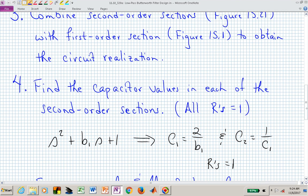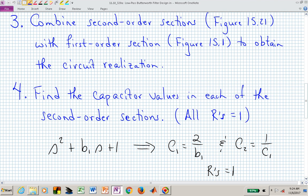Once we've determined how many second order sections we have, then for each second order section we have a specific S squared plus B1 S plus 1 quadratic factor. Each of those will have a different B1 value which leads to a different C1 value which leads to a different C2 value. We use these formulas to find those or calculate those, and all of the R's are 1 in those second order sections. If we have two second order sections, then we will have two C1s and two C2s, and those will be different in the two different sections.